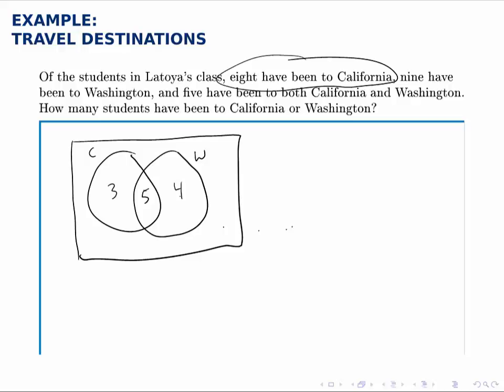So then when the question asks how many have been to California or Washington, we want the students in the intersection. So we add up three, five, and four for a total of twelve.